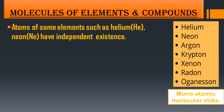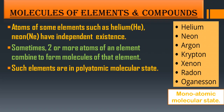Sometimes two or more atoms of an element combine to form molecules of that element — this is a polyatomic molecular state. When only a single atom exists alone, it is called monoatomic. When two atoms of the same element combine to form a molecule, it is called diatomic. Remember the difference between monoatomic, diatomic, and polyatomic molecular states.